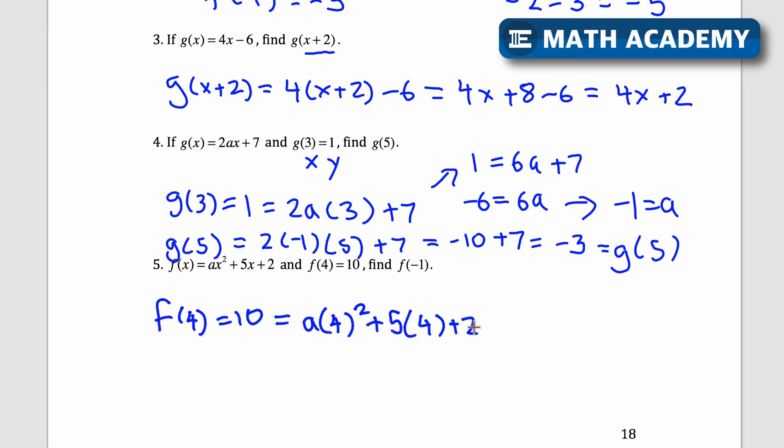So let's figure out a. Let's see. 5 times 4, that's 20. Plus 2, that's 22. So 4 squared, that's 16. So we get 16a. This was plus 22. That's equal to 10. We'll subtract 22 on both sides, and I get negative 12 equals 16a. If I divide both sides by 16, negative 12 divided by 16 is negative 3 fourths. So a equals negative 3 fourths.